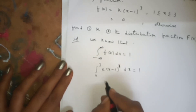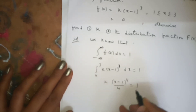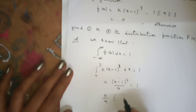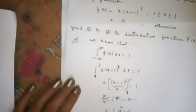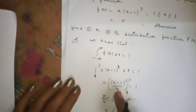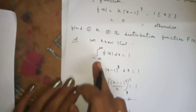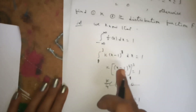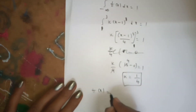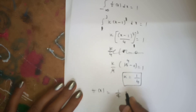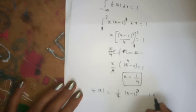Integrating k(x-1)³, we get k times (x-1)⁴/4, evaluated from 1 to 3. Applying the limits: k/4 times [(3-1)⁴ - (1-1)⁴] = k/4 times 16 = 1, giving k = 1/4. Therefore f(x) = (1/4)(x-1)³ for 1 ≤ x ≤ 3.